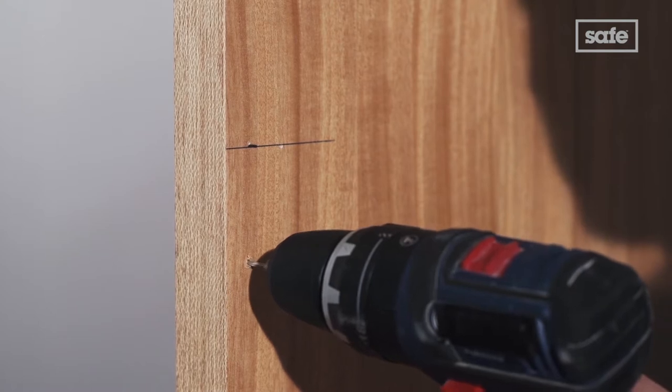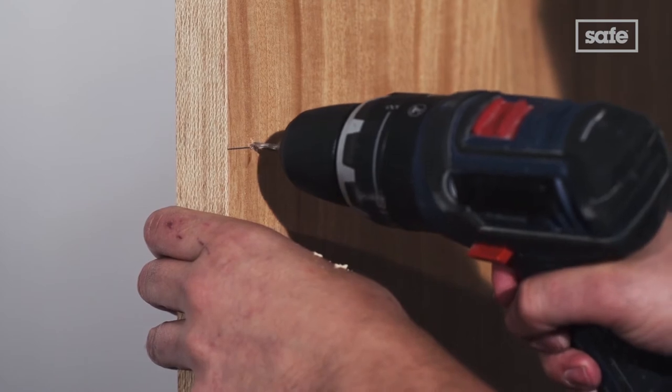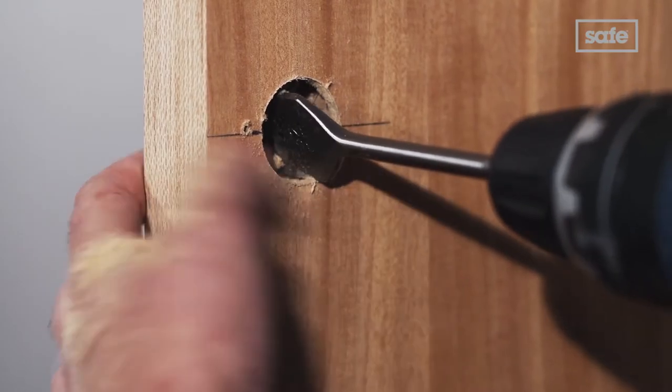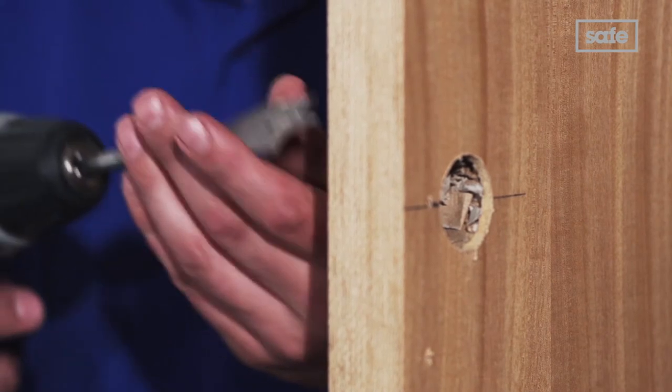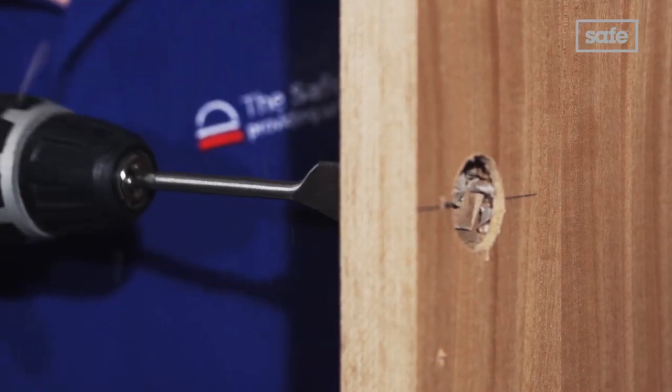Drill the two smaller holes as marked. Then, using a 32mm flat wood drill bit, drill the larger hole. Don't forget to drill from both sides as this will prevent the wood from splitting.